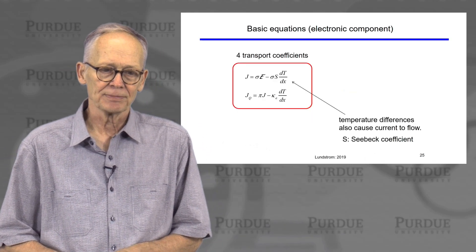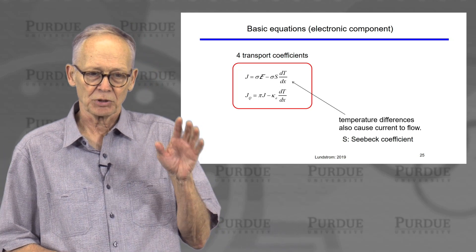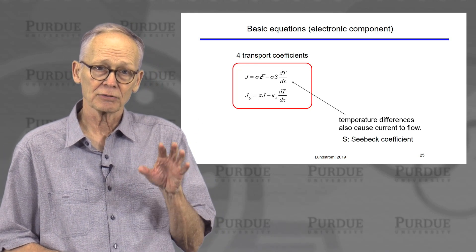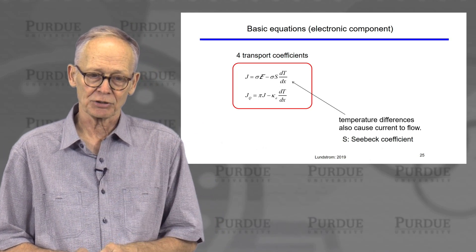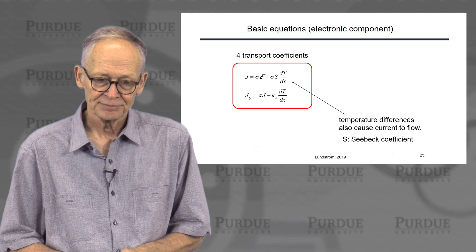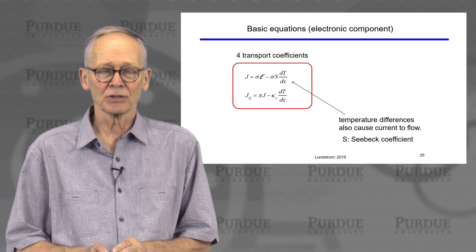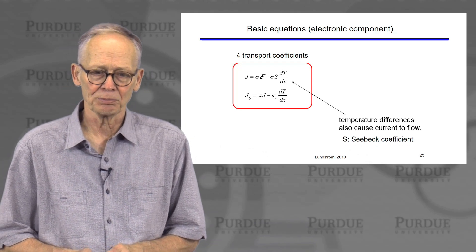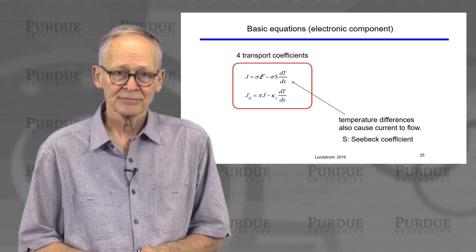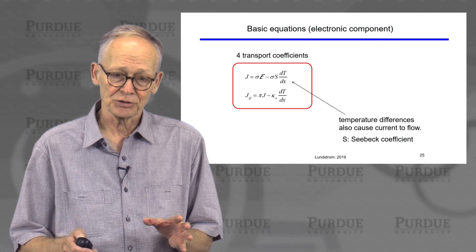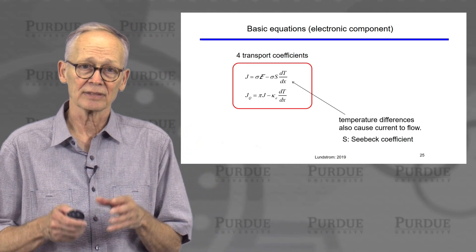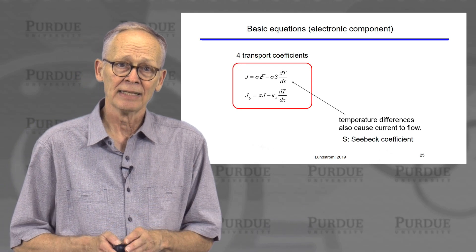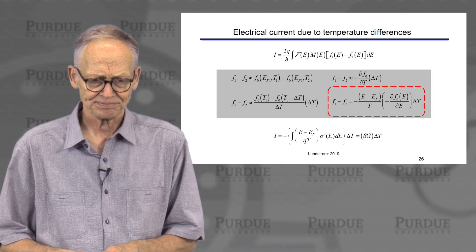The Seebeck coefficient is what is responsible for causing current to flow when there is a temperature gradient. S is known as the Seebeck coefficient — sometimes it's also called the thermal power. Temperature differences cause current to flow because they cause differences in the Fermi functions of the two contacts.